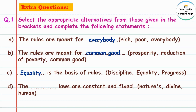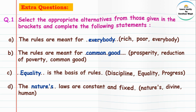Dash is the basis of rules — discipline, equality, or progress? Answer: equality is the basis of rules — samanata hach niyamanche adhar ahe. Next: the dash laws are constant and fixed — nature's, divine, or human? Answer: the nature's laws are constant and fixed.